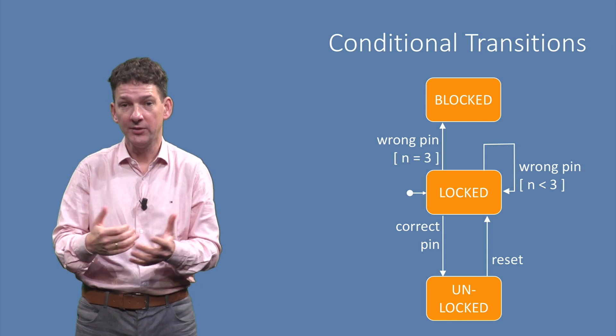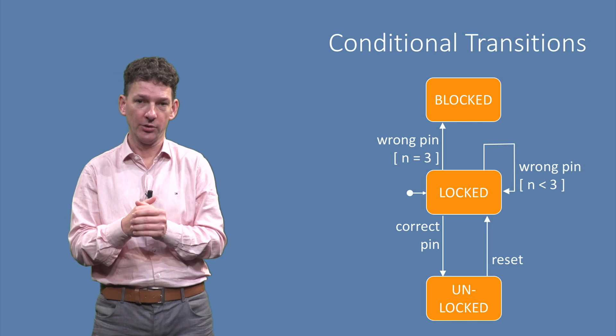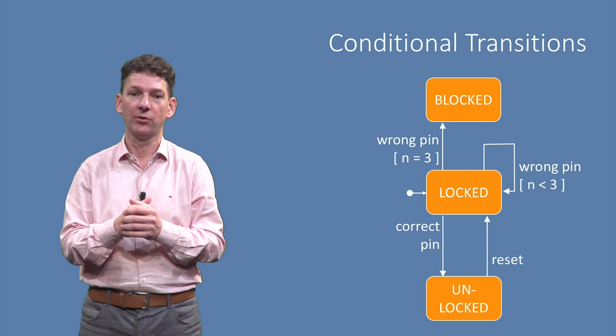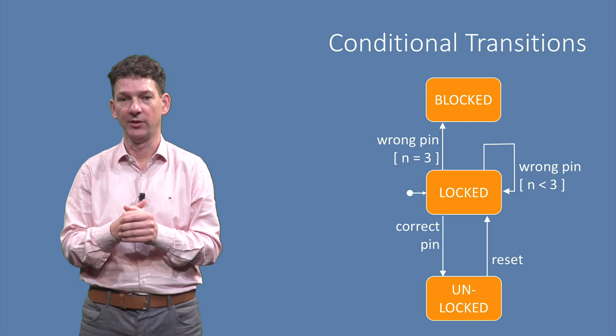After entering a wrong pin three times, the phone gets blocked, as is indicated here. Thus, the locked state has two outgoing edges, both triggered by the wrong pin event, and the condition determines what the resulting state is.